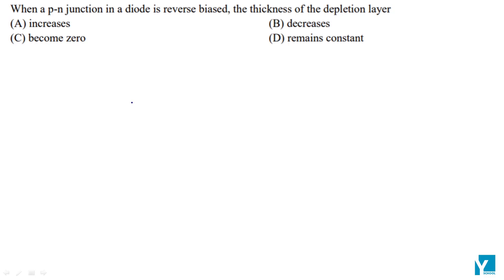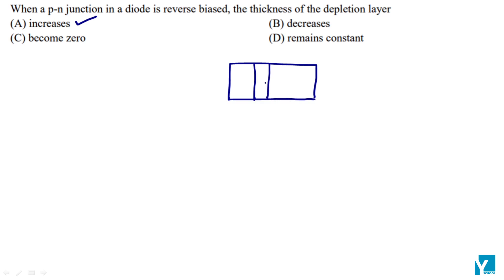When a pn junction in a diode is reverse biased, the thickness of the depletion layer will increase. In reverse bias, the electrons and holes present move farther apart, causing the depletion layer thickness to increase. It increases in reverse bias, so option A should be the correct answer.